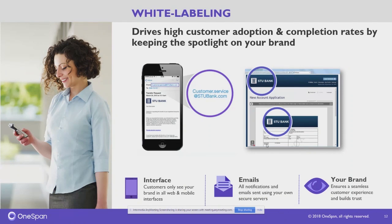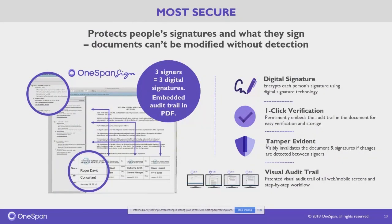Phishing is a growing concern — emails sent on behalf of someone else can damage your brand. OneSpan allows outgoing emails to come from your own domain name, because customers trust emails from you. If an email comes from a third party, security-conscious recipients will often delete it as a potential phishing expedition. With OneSpan, this is simply a configuration setting, and email templates can also be customized to match your look and feel.